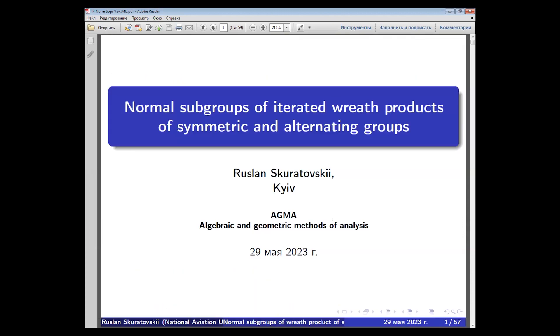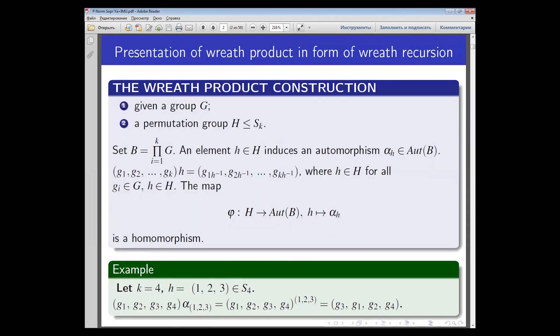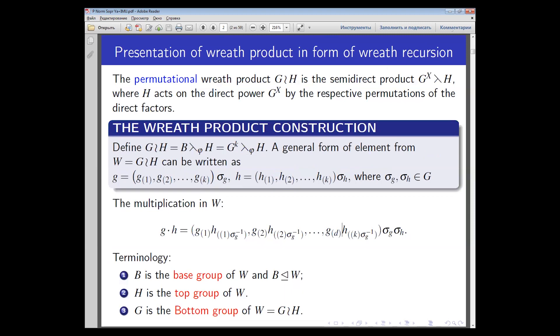I will recall that the wreath product of permutation groups is a construction which has one subgroup of a permutation group and another subgroup on copies of which this group acts. This subgroup forms a direct product of group G, called the base of the wreath product. The wreath product of a permutation group is a semi-direct product.